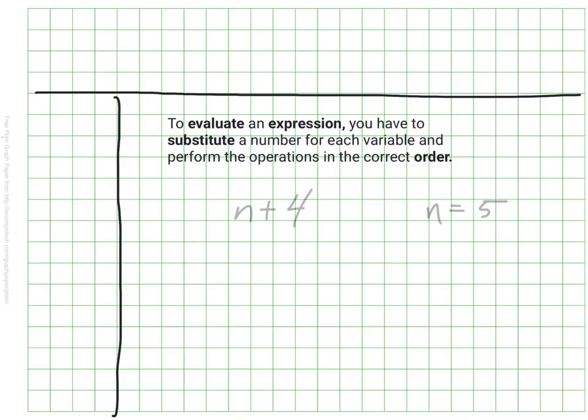We might see something like this, an expression that says n plus 4. And on the side, or somewhere nearby, it will tell you that n is 5. To evaluate this, we simply need to replace, or substitute, n with the number 5 and then solve.